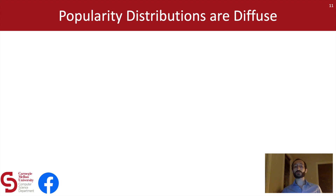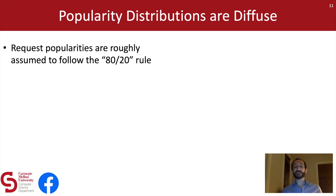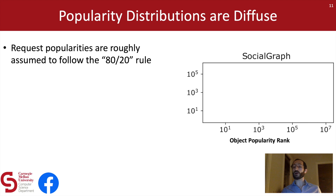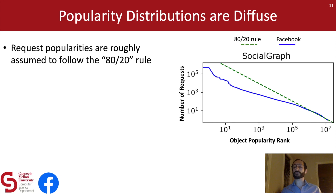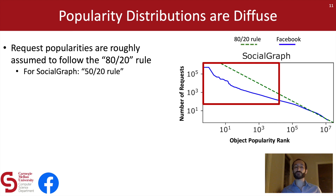The first thing we notice is that these systems tend to have diffuse popularity distributions. Caching workloads are typically assumed to follow an 80-20 rule — meaning 80% of the requests to a cache refer to just 20% of the objects. This is really good for caching because it means that if I can fill my cache with the 20% most popular objects, I'll achieve something like an 80% hit ratio. But if we check this assumption for the social graph cache — putting object popularity rank on the x-axis and the number of requests on the y-axis — an 80-20 rule would predict something like this green line, but what we actually measure is this blue line.